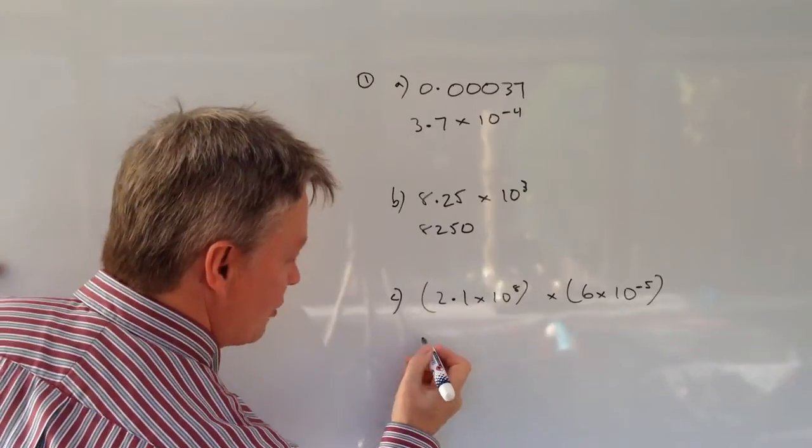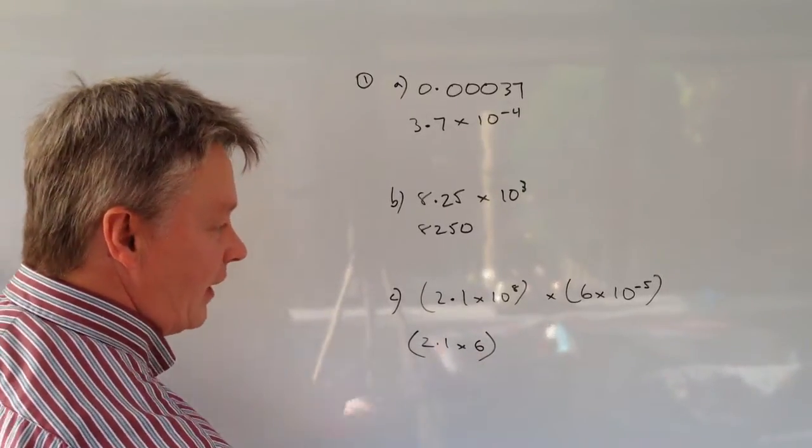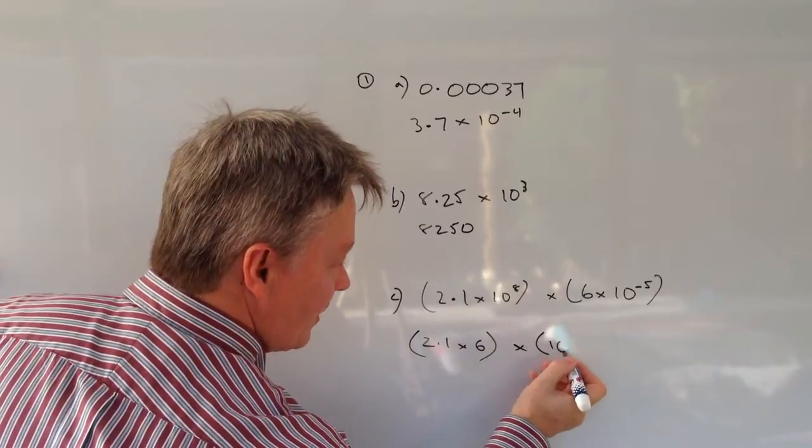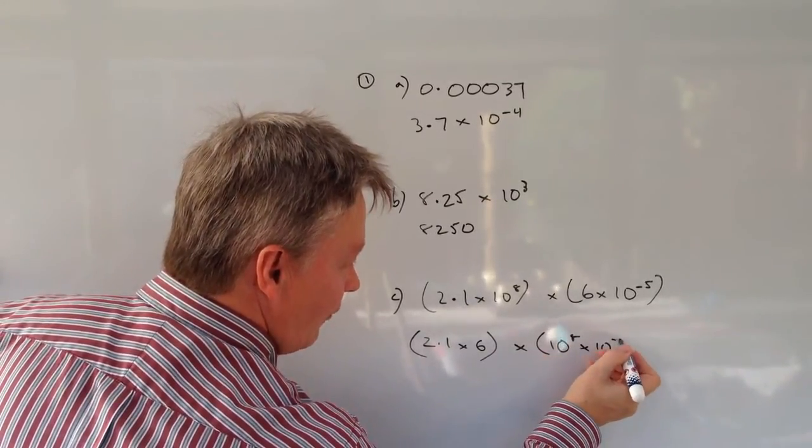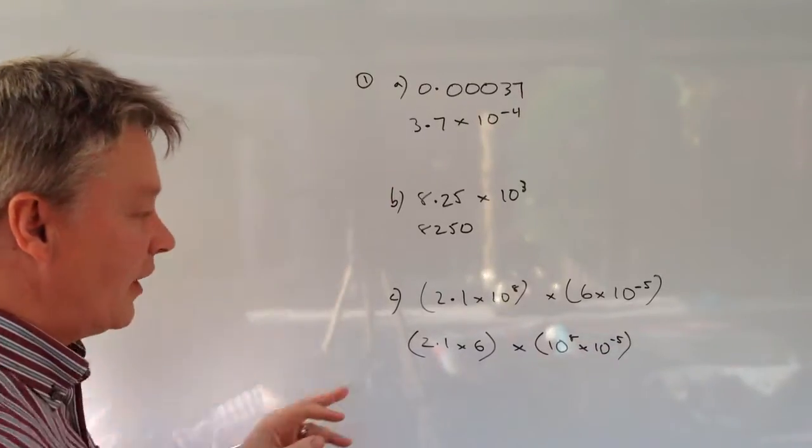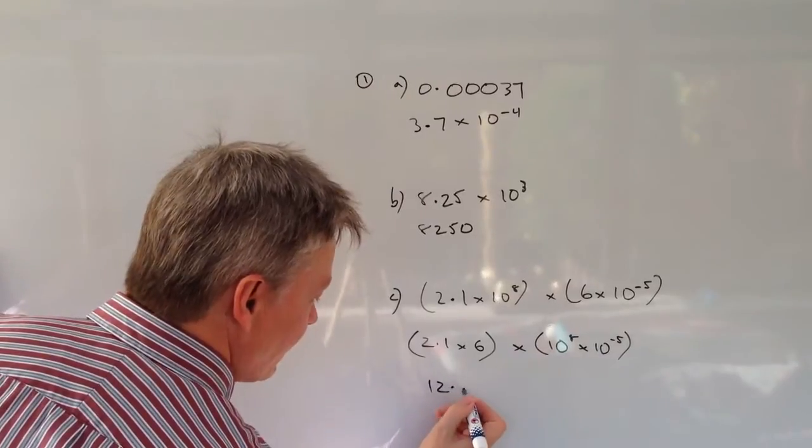And I'm going to write this as 2.1 times 6, put that into brackets and that's multiplied by 10 to the 8 times 10 to the power of minus 5. Well 2.1 times 6 is 12.6.